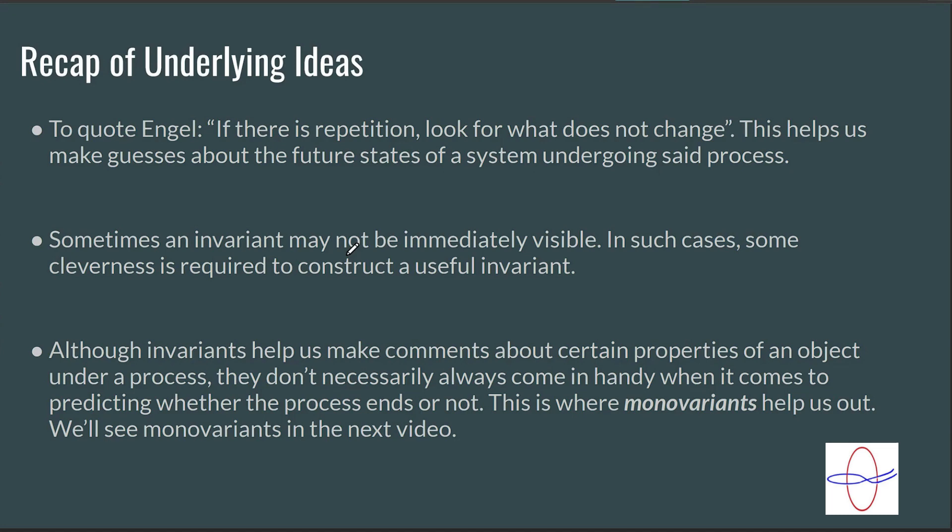Sometimes an invariant may not be immediately visible. In such cases, some cleverness is required to construct a useful invariant. You might find invariants, but they might not necessarily be useful. Although invariants help us make comments about certain properties of an object under a process, they don't necessarily always come in handy when it comes to predicting whether the process ends or not. You can say, is this state possible? If there is an end state, what can I say about it? But will the process end is a question that invariants do not help us answer. To answer these questions, we talk about monovariants in the next video.